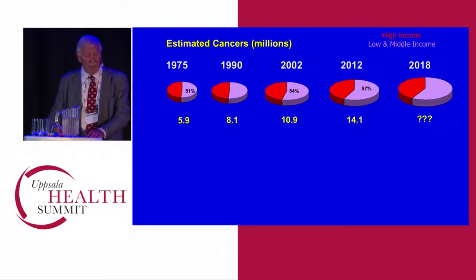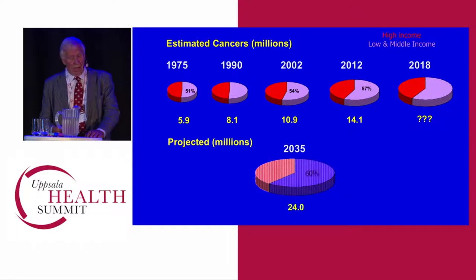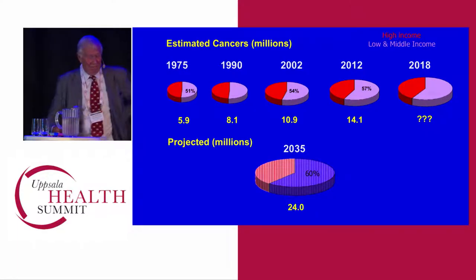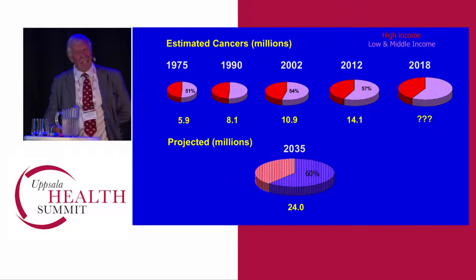Here are the global estimates. In 2012 — the figure everybody cites — there were 14 million new cancer cases, slightly over half in low- and middle-income countries. For 2018, I can't tell you, but you can see it's slightly more. And as we've heard, based on the 2018 estimates, by 2035 there will be something like 24 million — quite a big increase — and still a shift toward lower- and middle-income countries.